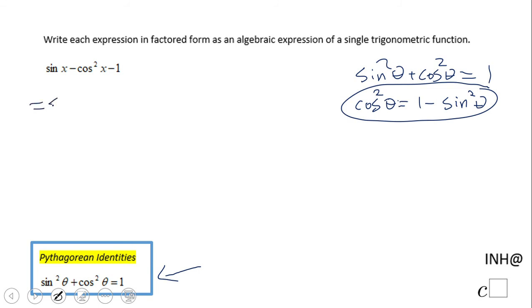Here we're going to replace cos²x with 1 - sin²x. Then I'm going to eliminate the parentheses and simplify.